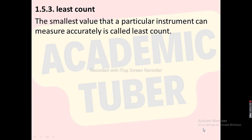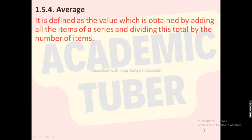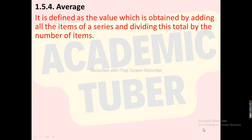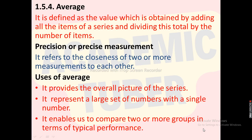Least count is defined as the smallest value that a particular instrument can measure accurately. It is very important in scientific measurement because it helps to get accurate readings. The lesser the least count value of any instrument, the higher will be its accuracy. Average is defined as the value obtained by adding all the items of a series and dividing the total by the number of items. Precision refers to the closeness of two or more measurements to each other. Uses of average: it provides the overall picture of the series, represents a large set of numbers with a single number, and enables us to compare two or more groups in terms of typical performance.